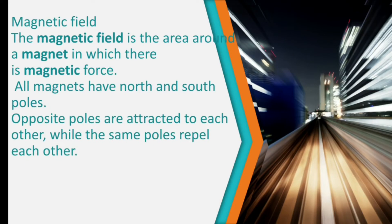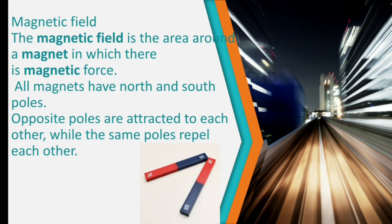When I try to bring north and north together, I feel a repulsive force — they are the same pole. But with opposite poles, they attract. That is the rule of magnetism: same poles or like poles repel, and unlike or different poles attract. So north and north together will repel, and north and south together will get attracted. The magnetic field is the area around the magnet in which there is magnetic force. All magnets have north and south poles; opposite poles attract each other while same poles repel.